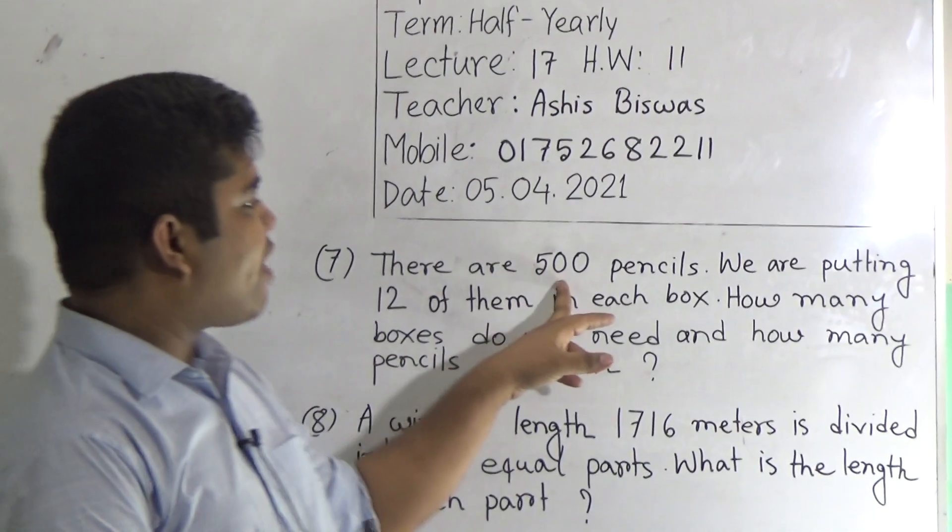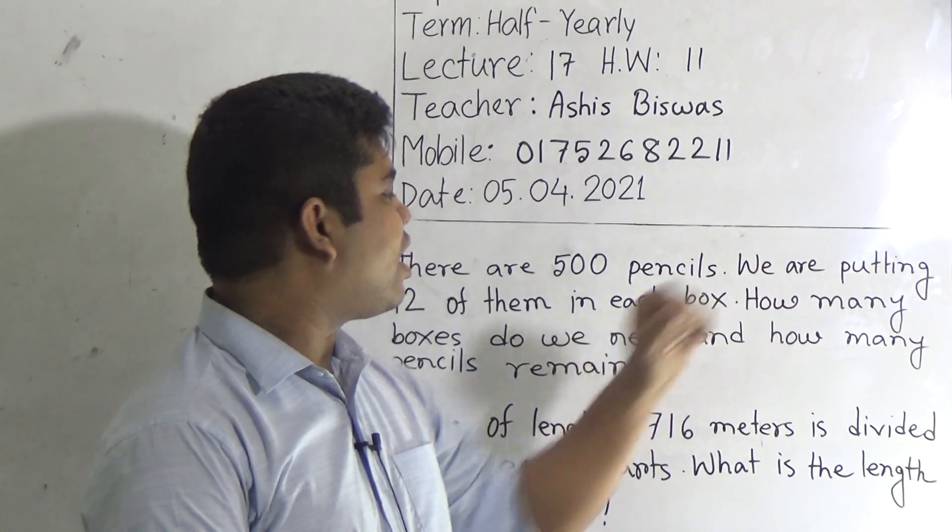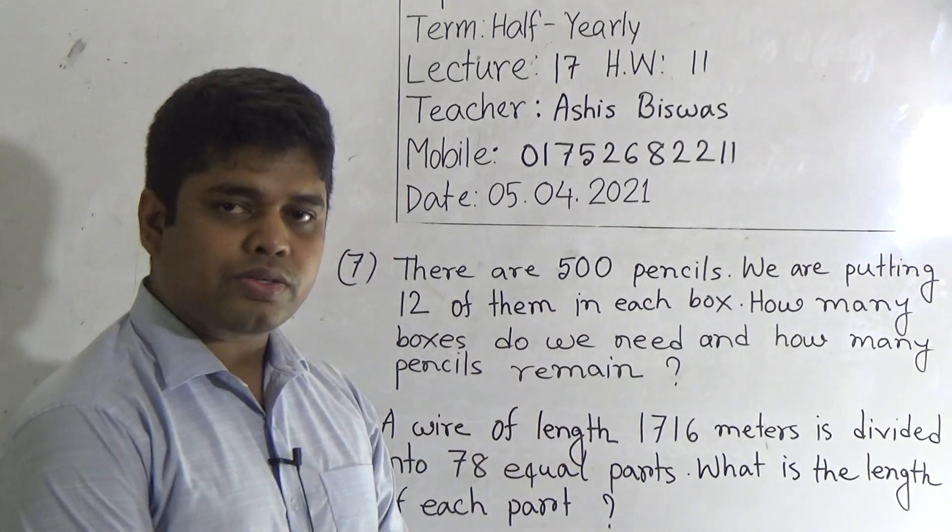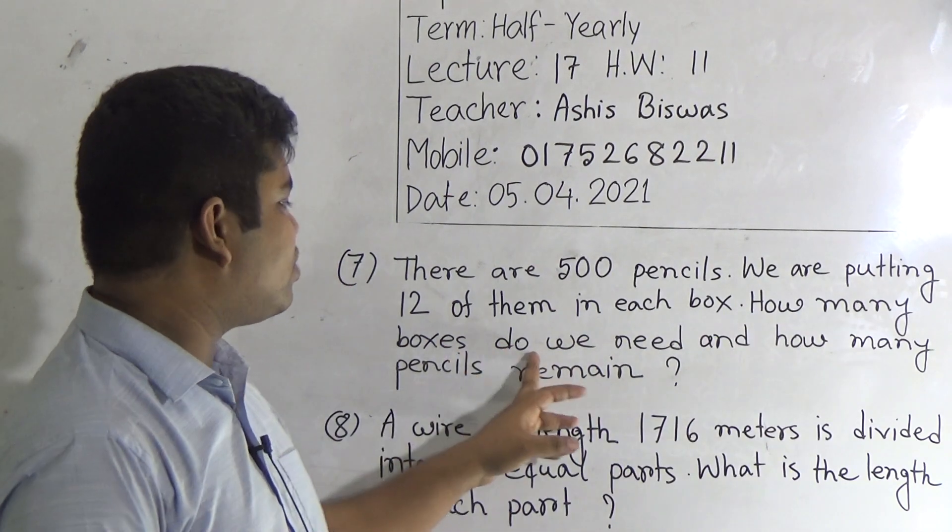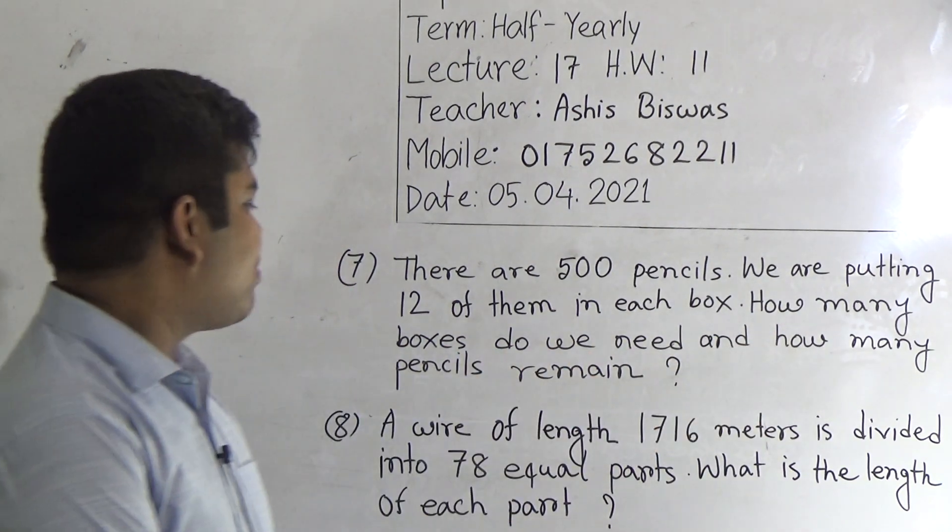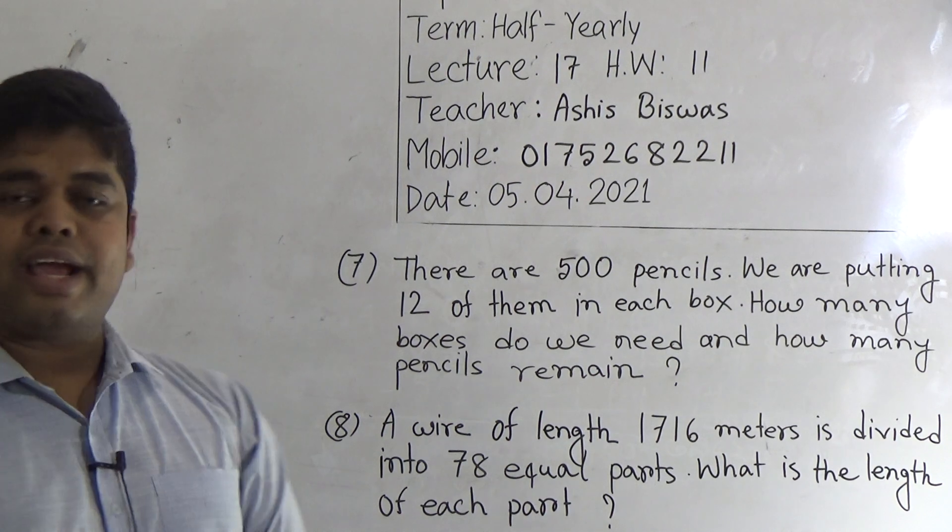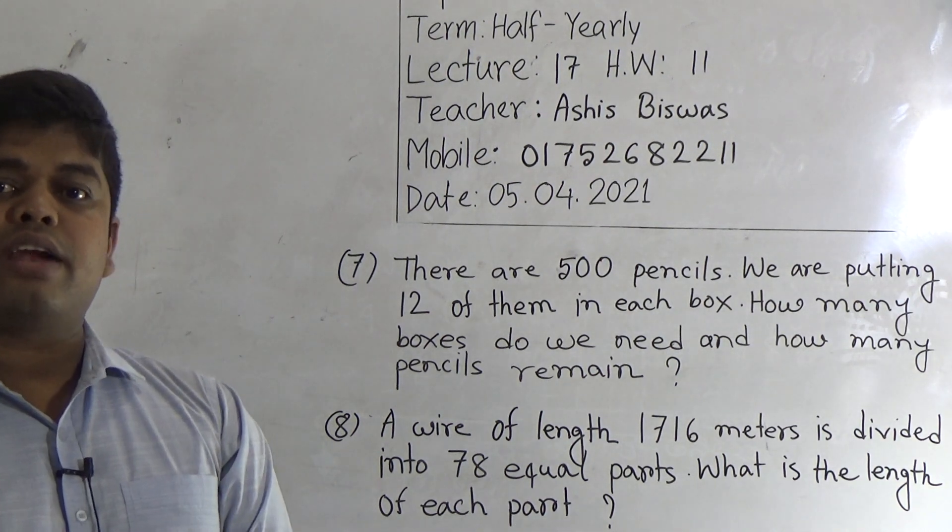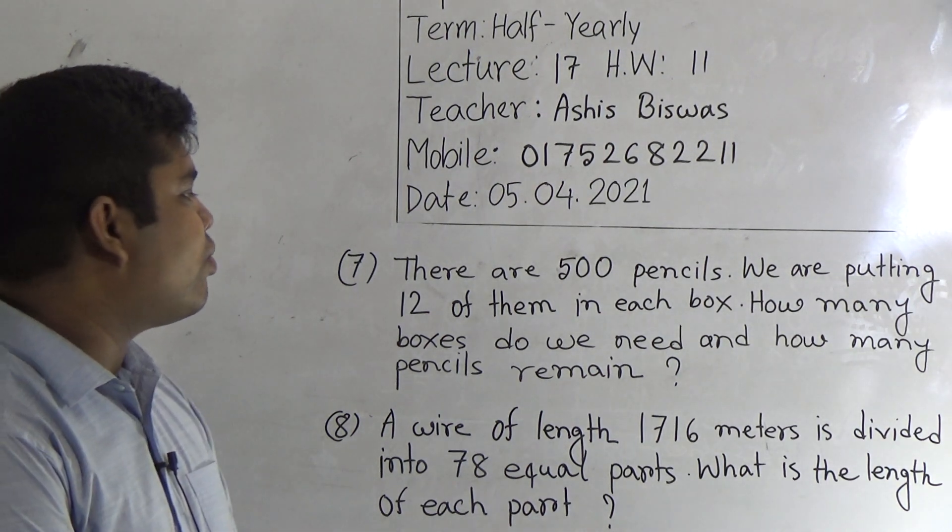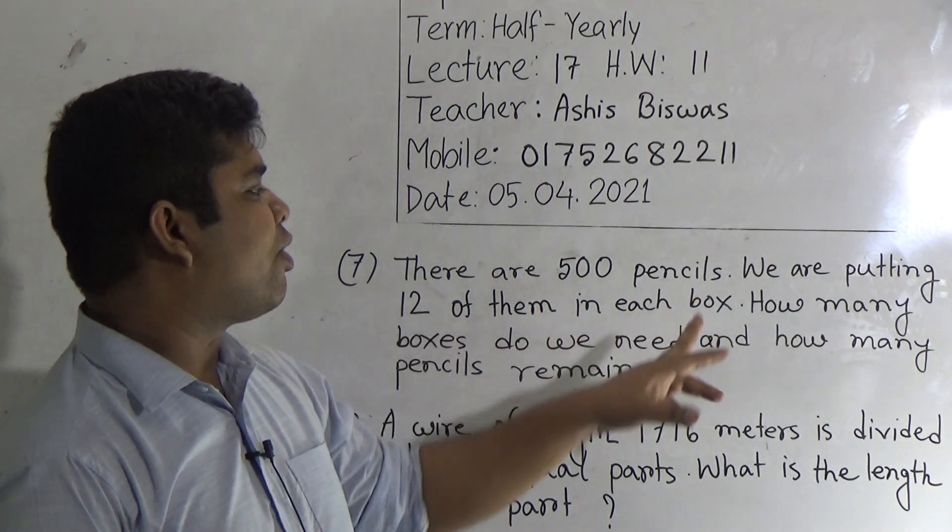So at first we solve question number 7. There are 500 pencils. We are putting 12 of them in each box. How many boxes do we need and how many pencils remain? That means there are 500 pencils. So we are putting 12 of them in each box.